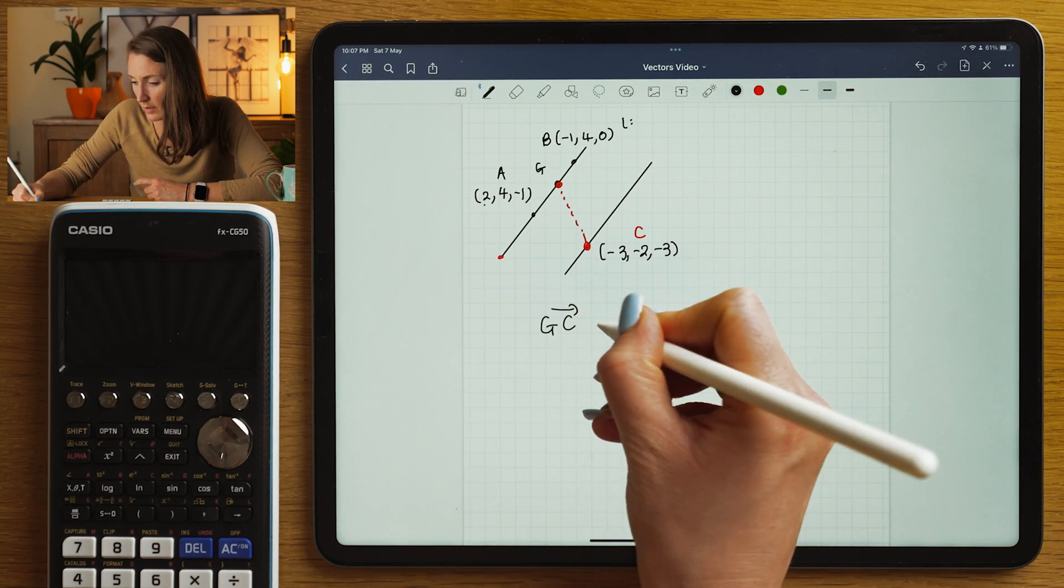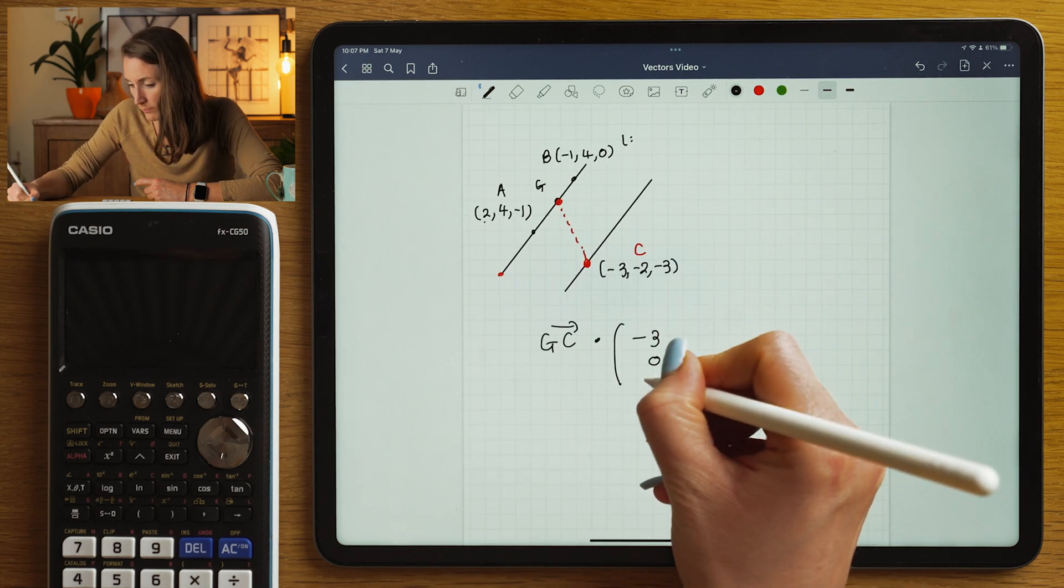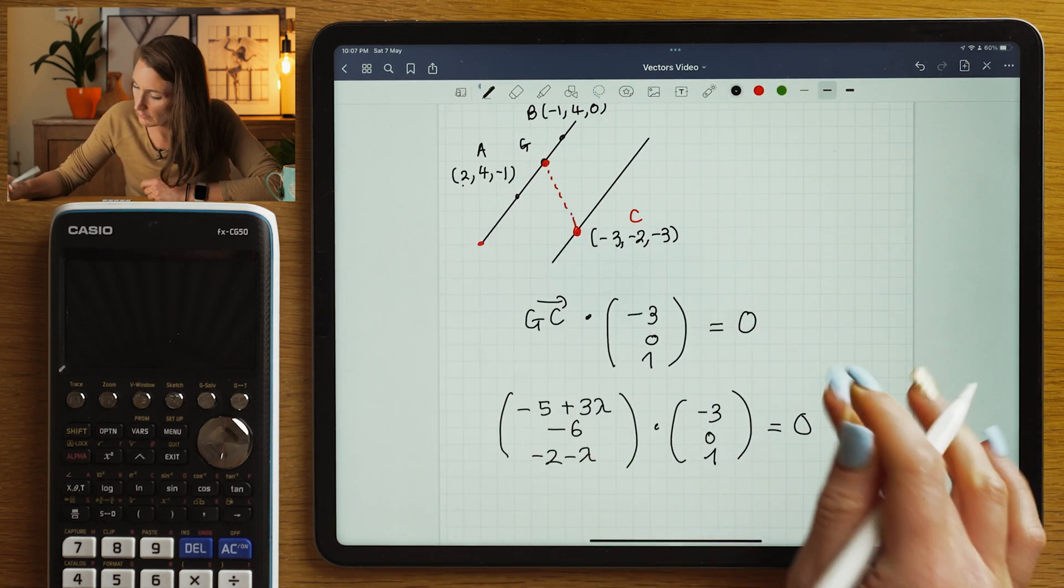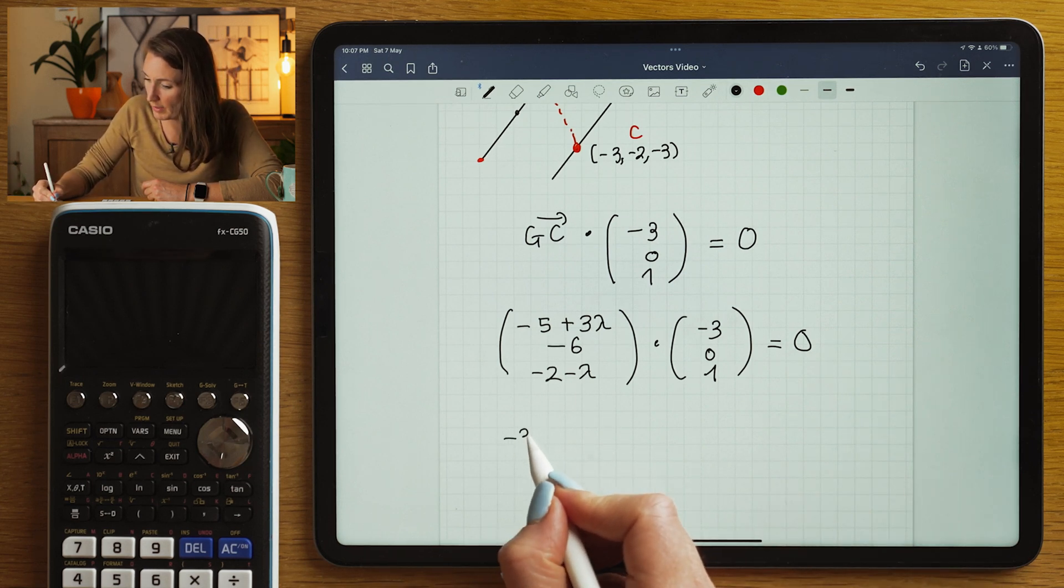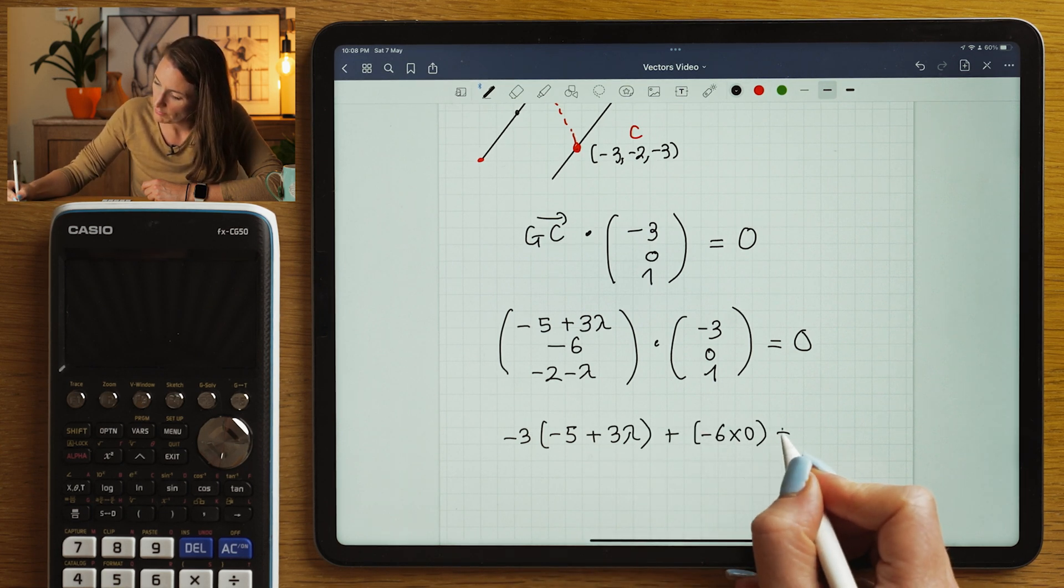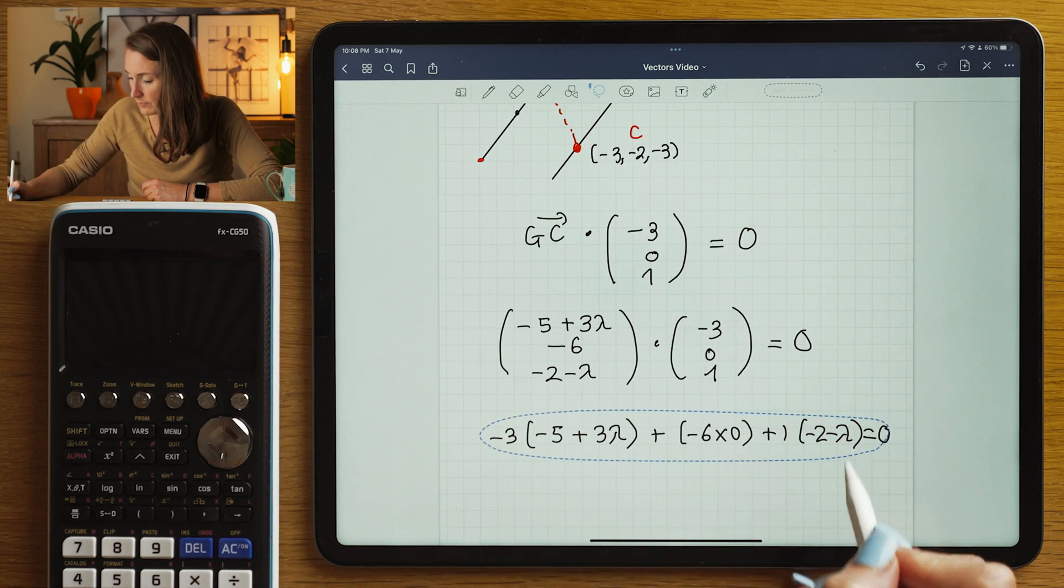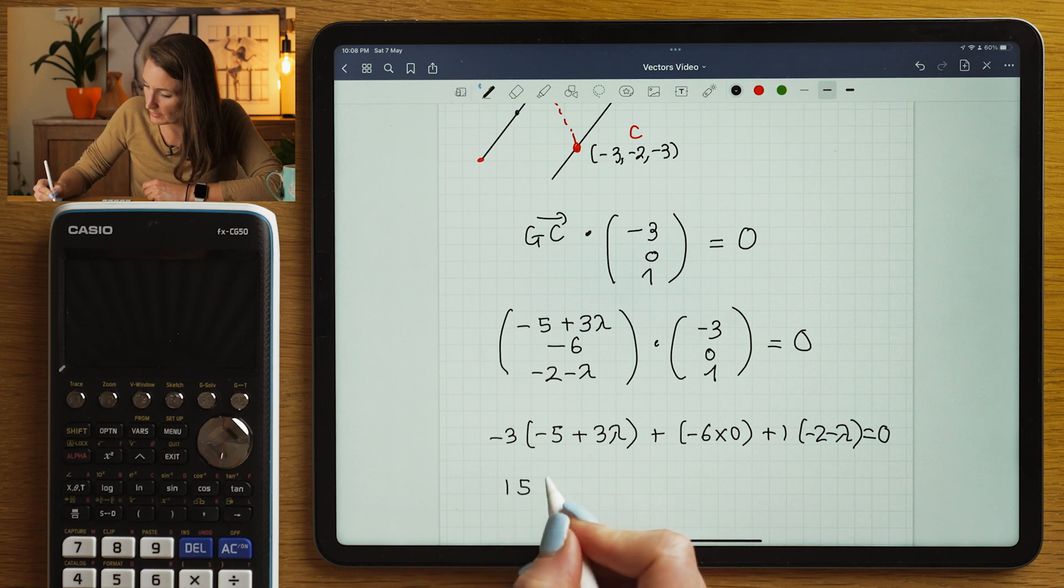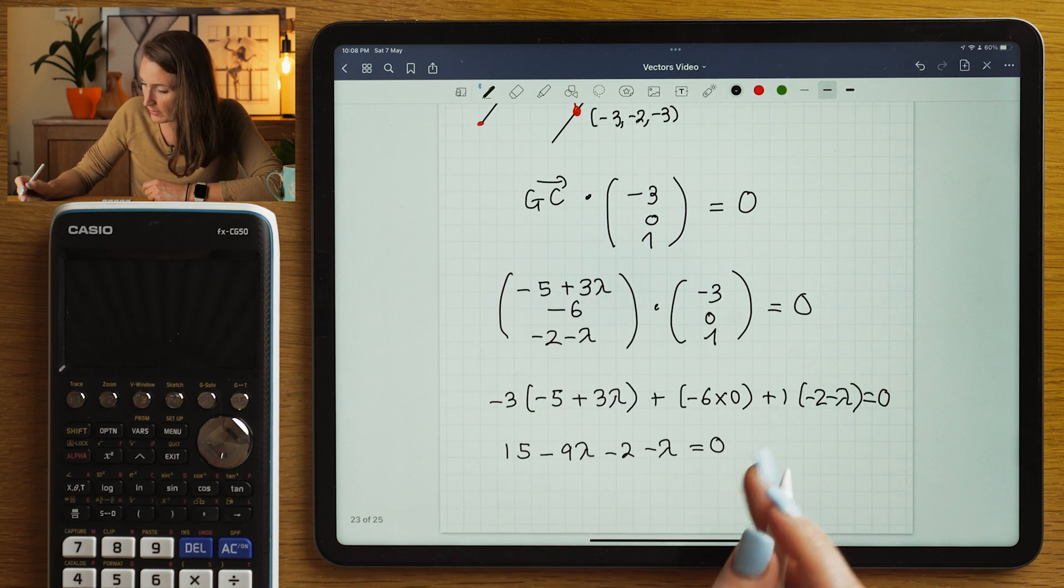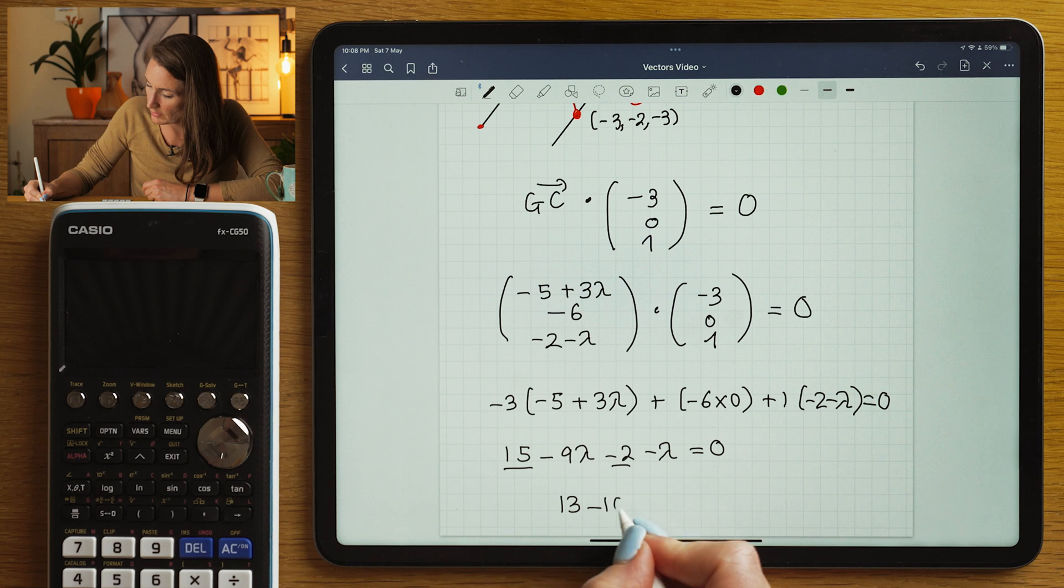So let's find that lambda. So I'm going to do GC dotted with the direction vector, which is (-3,0,1), and I'm going to set that equal to 0 and solve for lambda. So GC is this vector here. So that's going to be -3 times (-5+3λ) plus -6 times 0 plus 1 times (-2-λ) equals 0. That's 15 minus 9λ minus 2 minus λ equals 0. 15 minus 2 is 13,